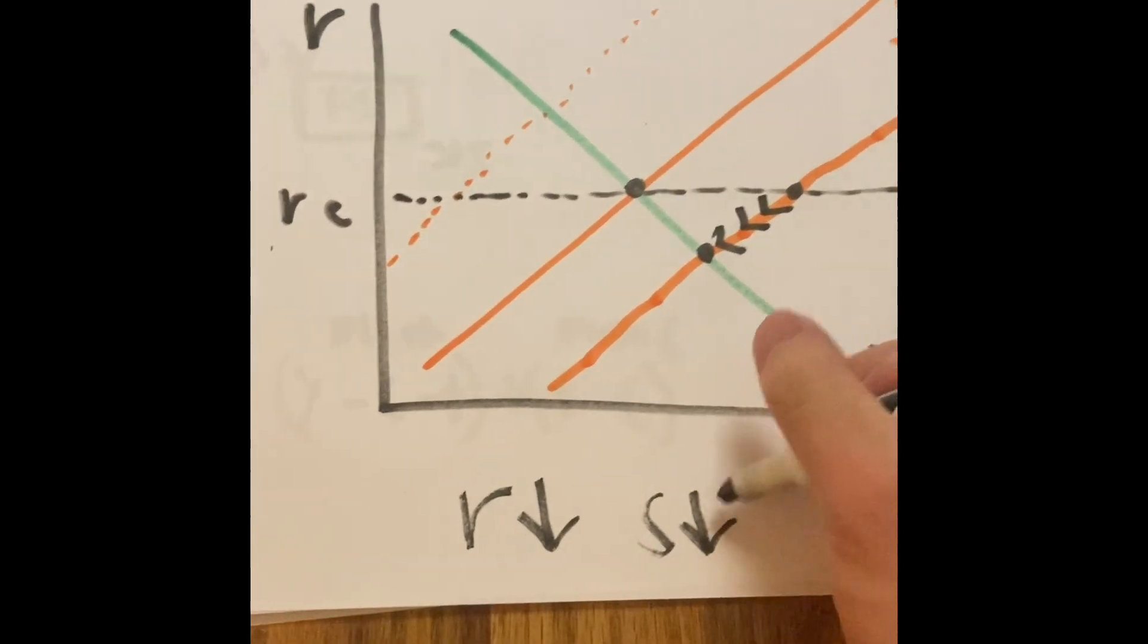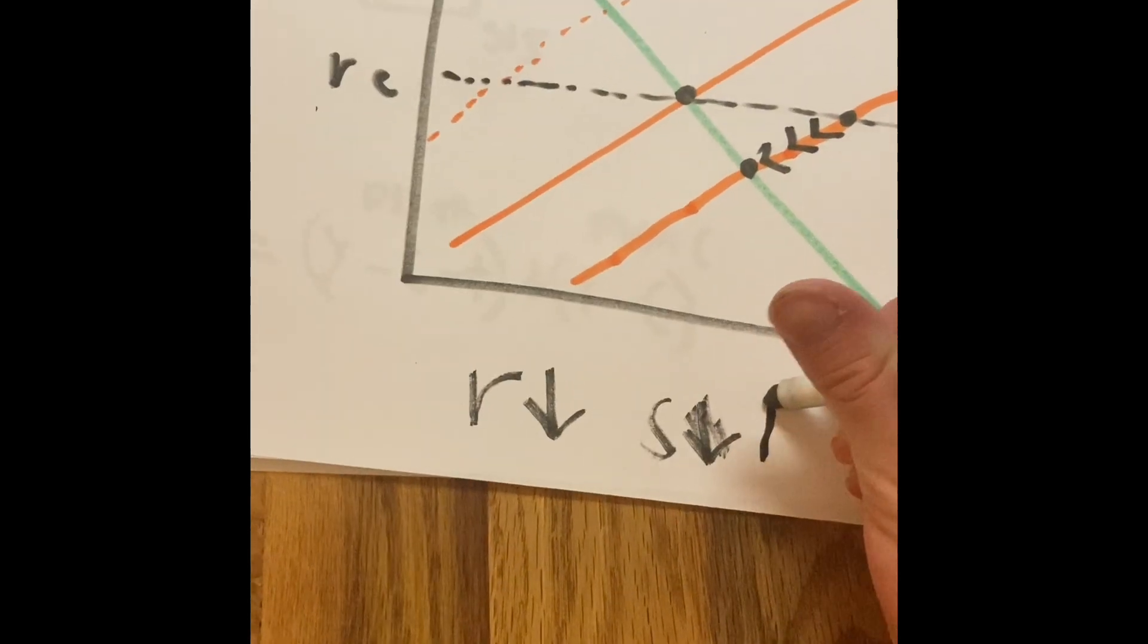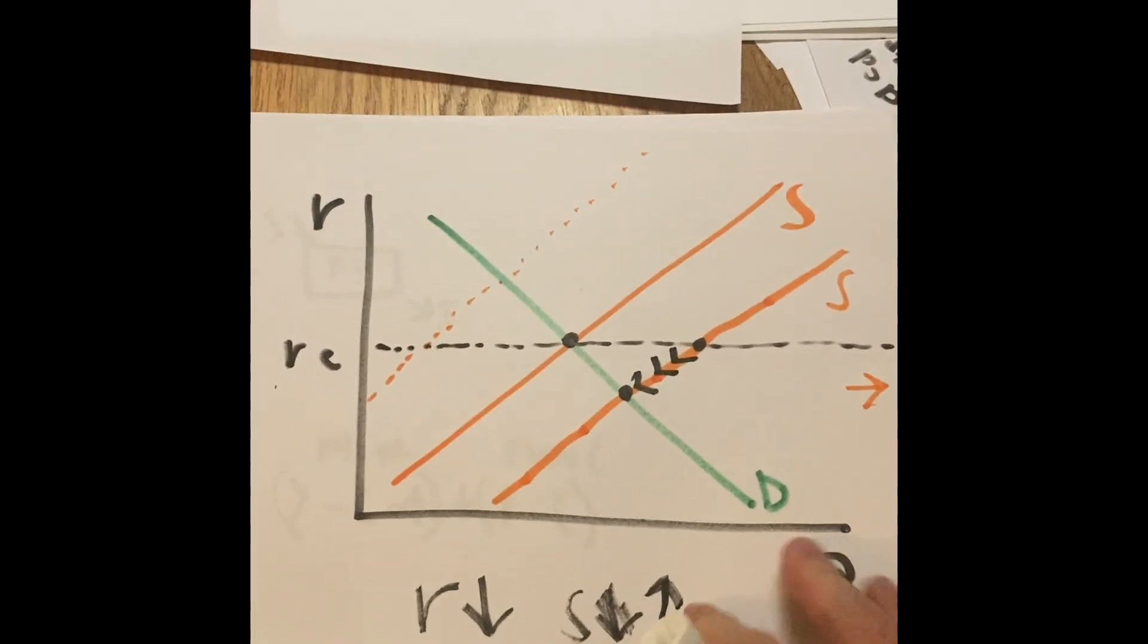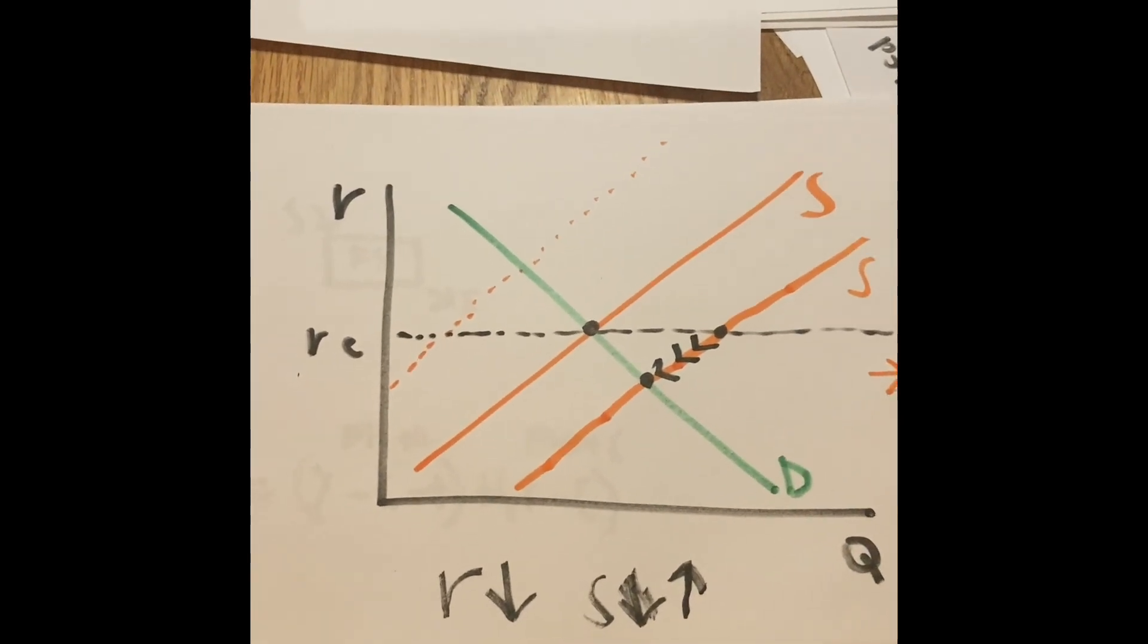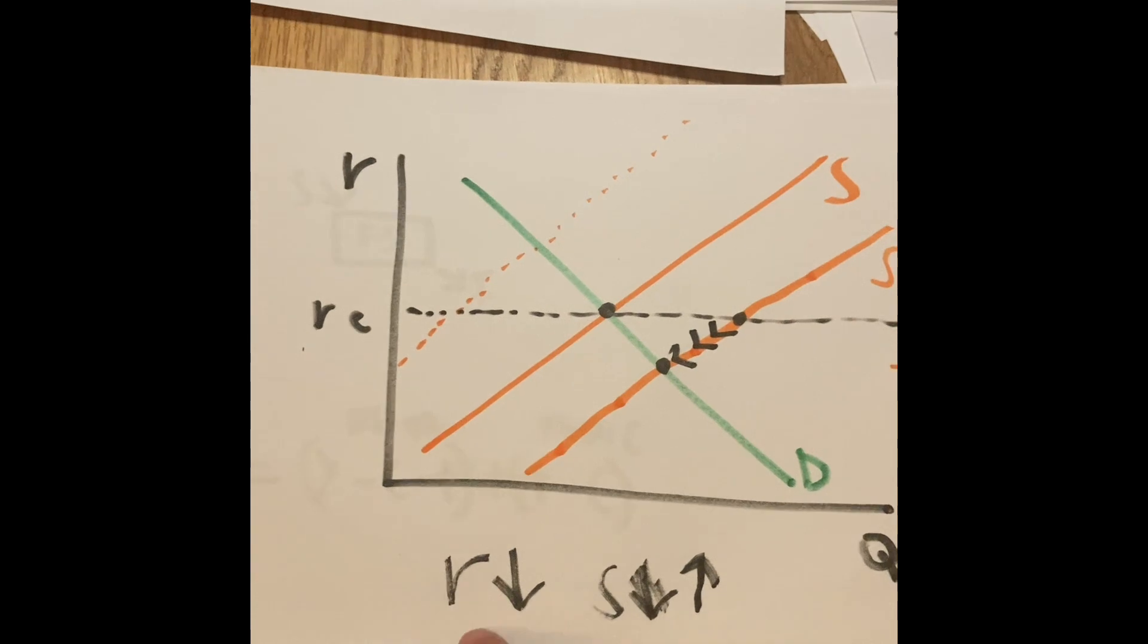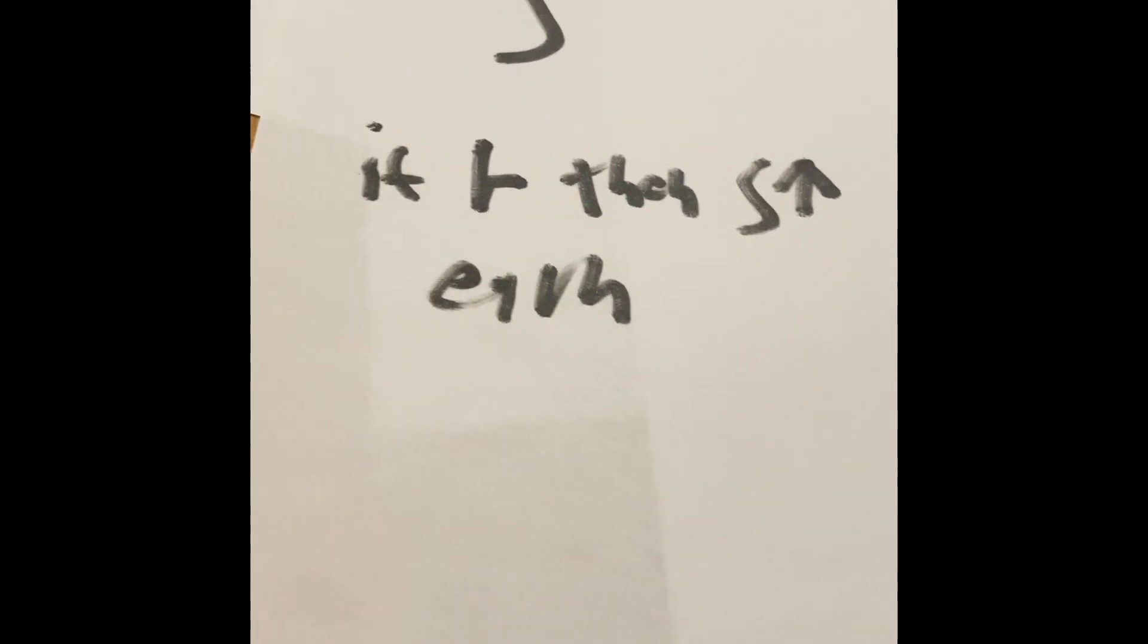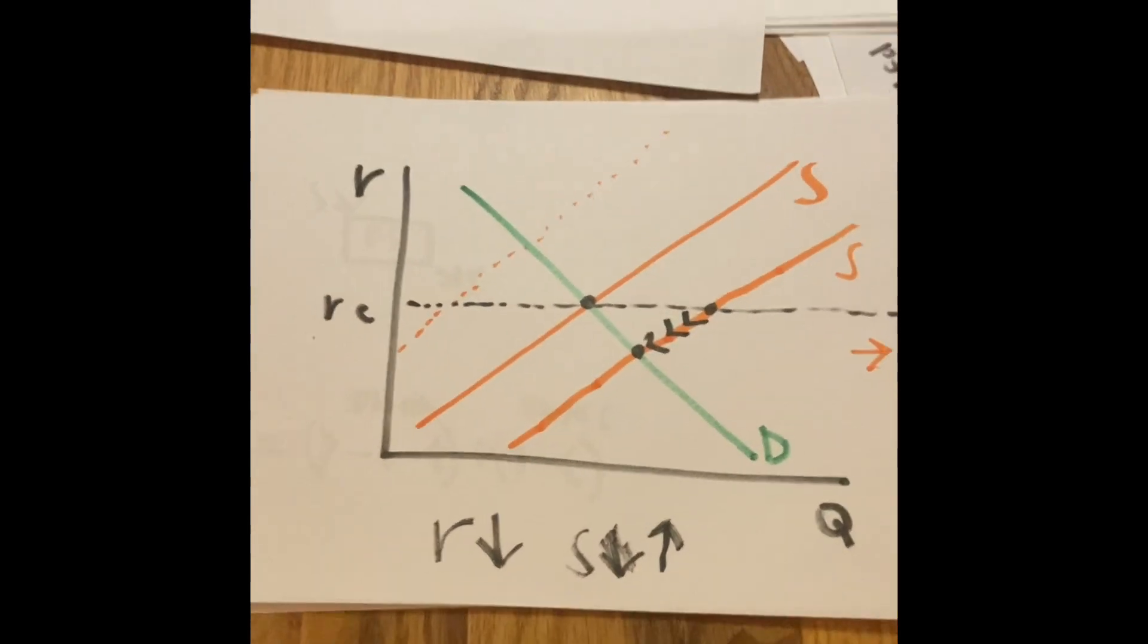Hang on, I meant to say the supply went up. But there is a little bit of a problem. We said the interest rate went down. The supply went up. But wasn't the entire law of economics, the law of supply, if the interest goes up, then the savings go up. But in this scenario, they can break the rules too.